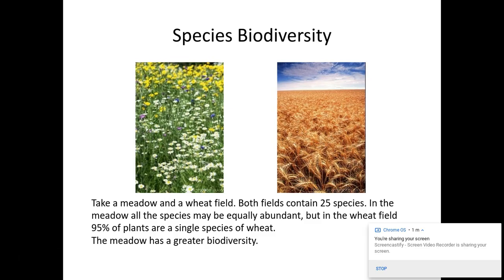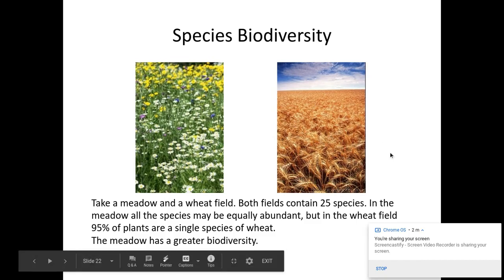Whereas in the wheat field, it is predominantly wheat. Even though there are 25 species giving the same species richness, it has a low species evenness because some of those 25 species are very low in abundance — very few individuals of some of those species.